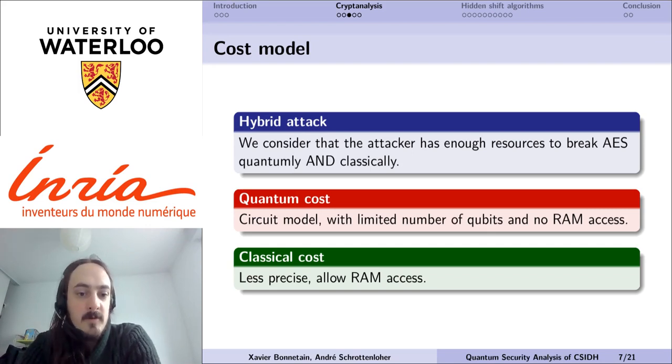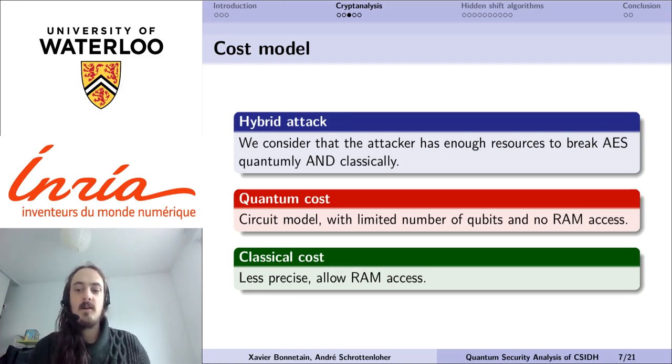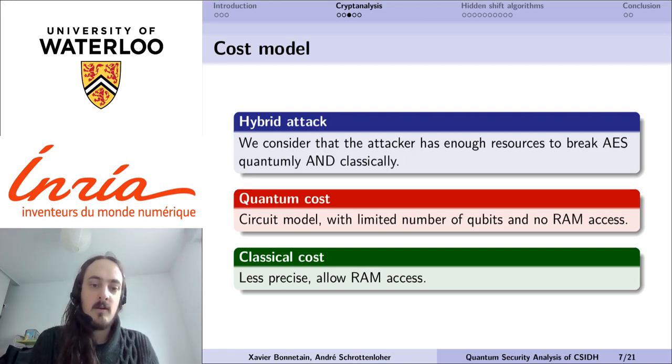Now, before detailing our quantum attacks, we need to talk a bit about our cost models. In this presentation, we will consider hybrid attacks, that is, quantum attacks that will defer part of their computations to a classical computer. In order to estimate the available resources, we consider that an attacker has at most enough resources to break AES quantumly and classically.